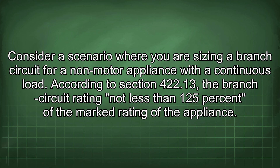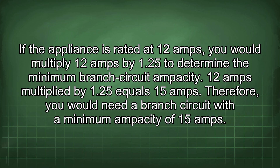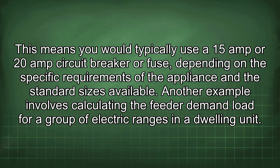Consider a scenario where you are sizing a branch circuit for a non-motor appliance with a continuous load. According to section 422.13, the branch circuit rating must be not less than 125% of the marked rating of the appliance. If the appliance is rated at 12 amps, multiply 12 amps by 1.25: 12 × 1.25 = 15 amps. Therefore, you would need a branch circuit with a minimum ampacity of 15 amps.